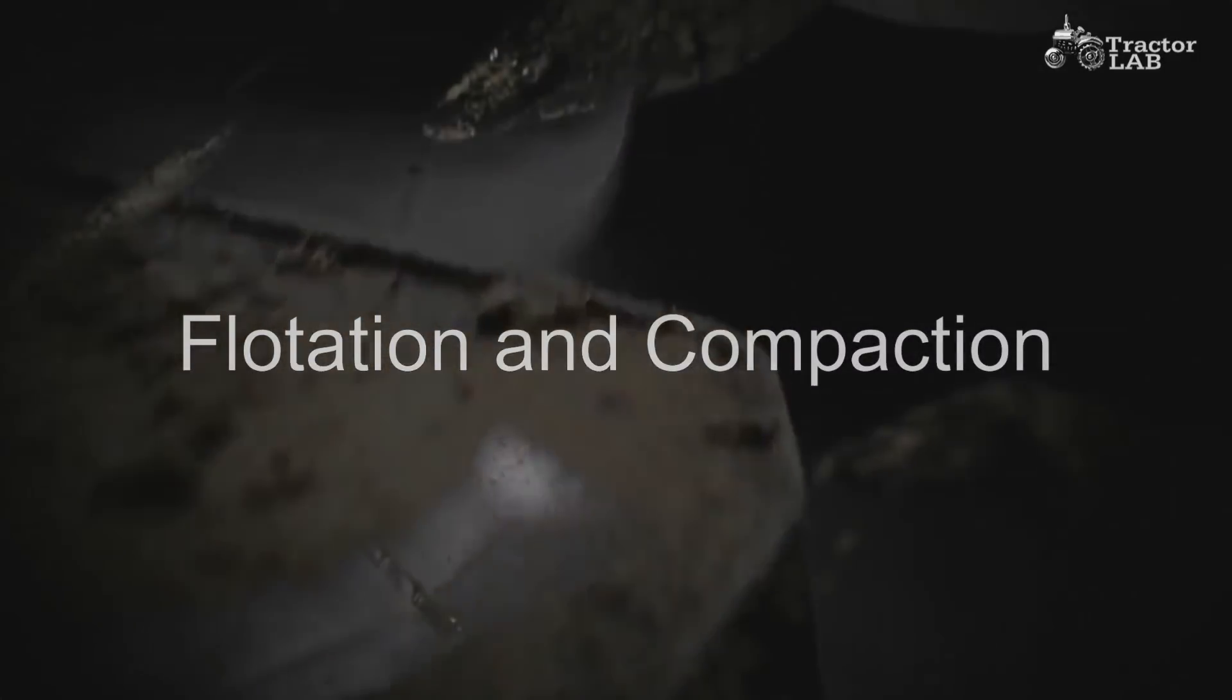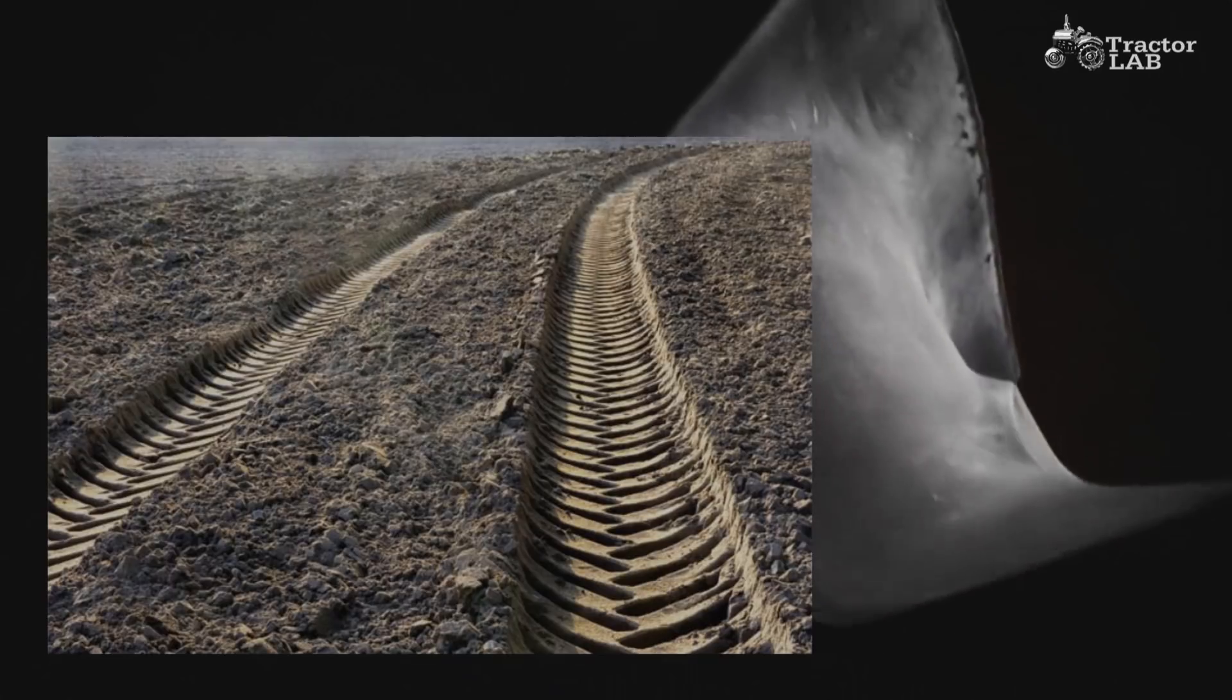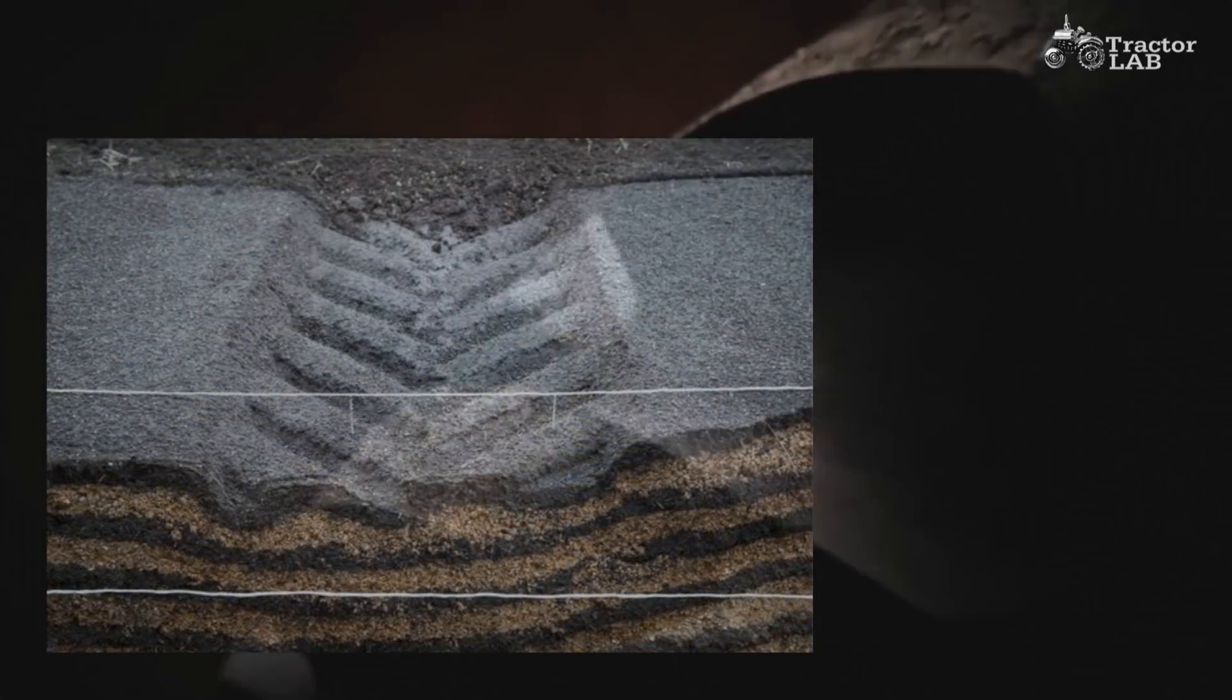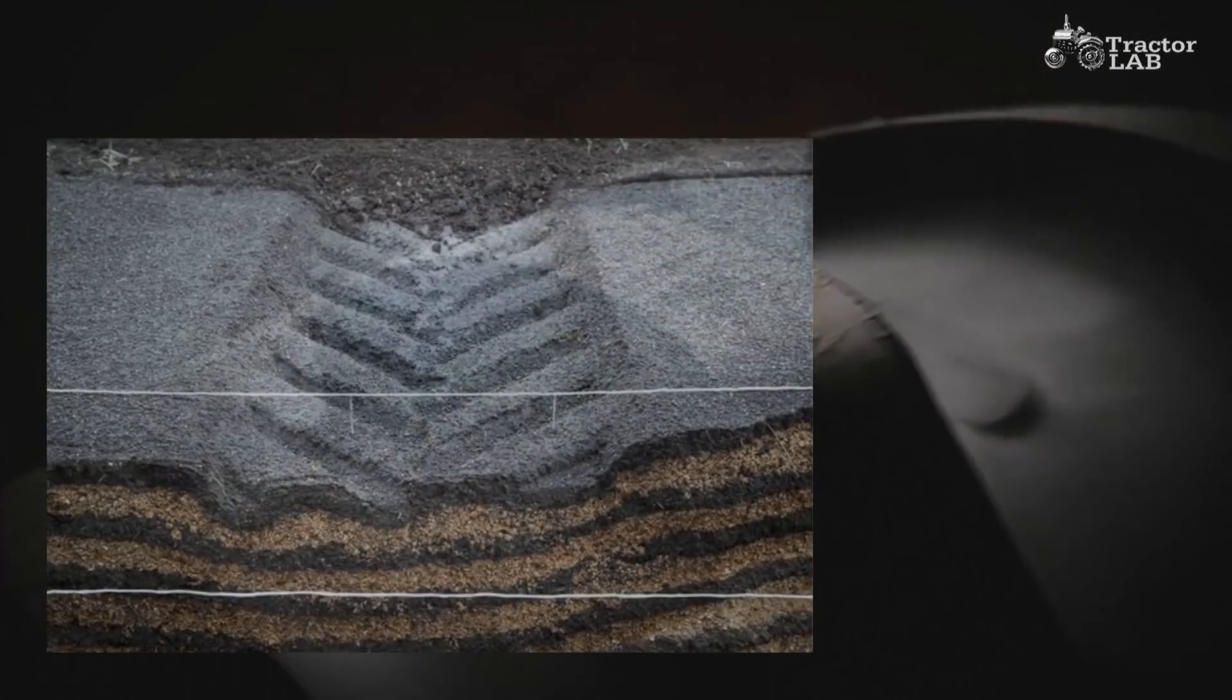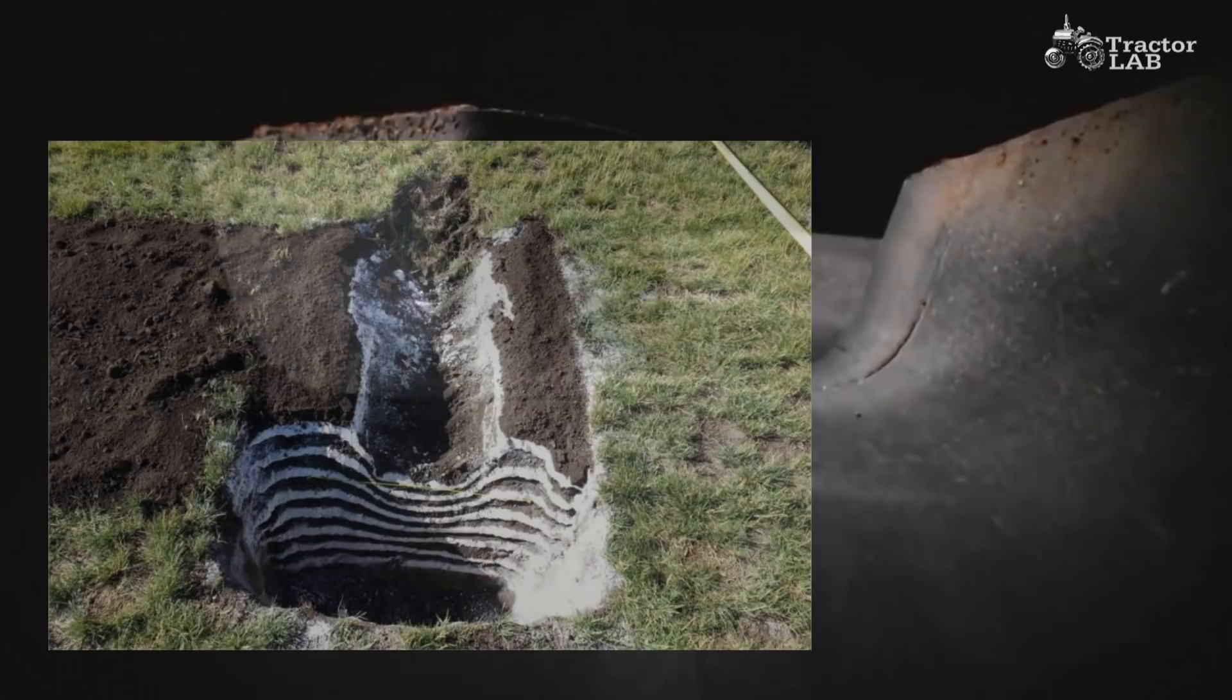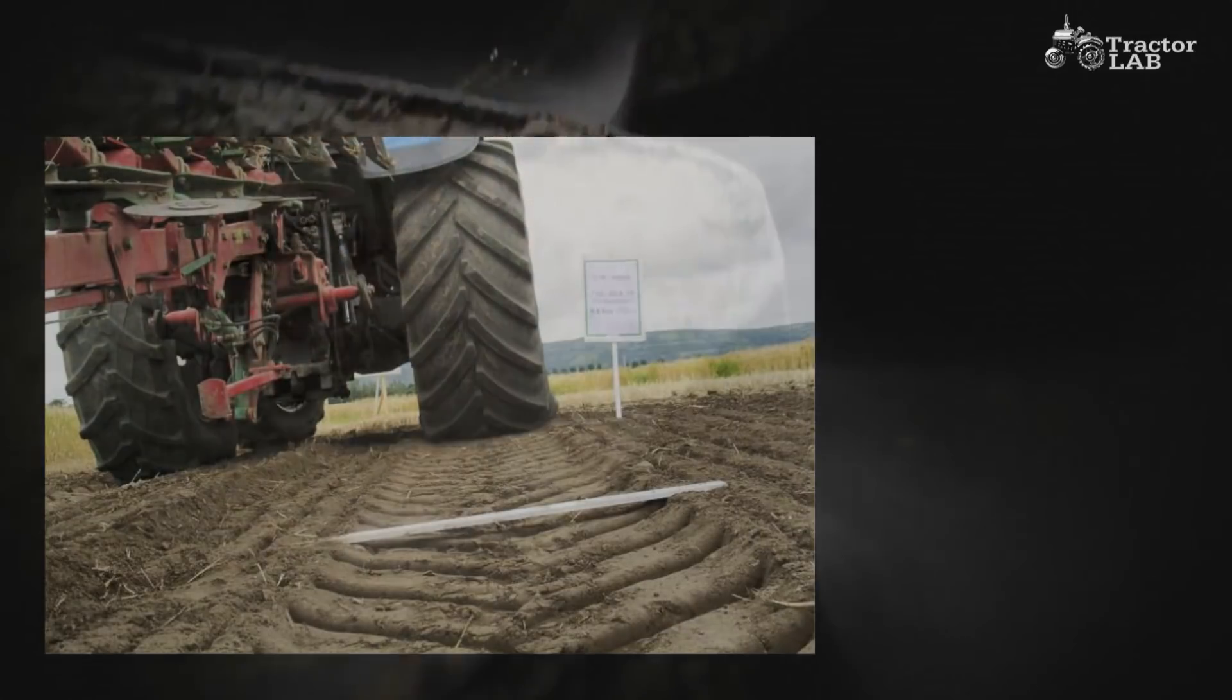Flotation and compaction. Flotation is defined as the ability of a tire to resist sinkage into the soil. If a tire is not able to stay on top of the soil, it will leave a rut under which the soil texture is disturbed. It is a concern in loose, wet, or easily compacted soils.